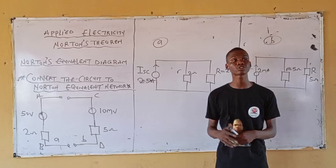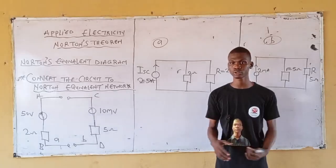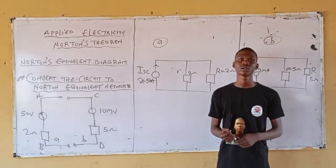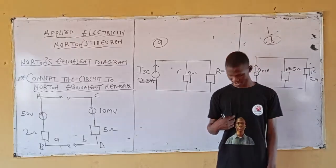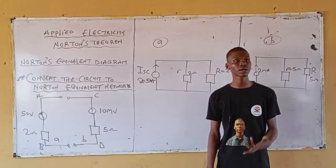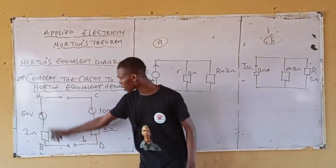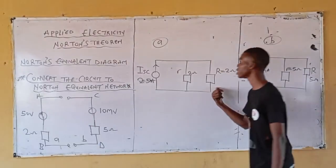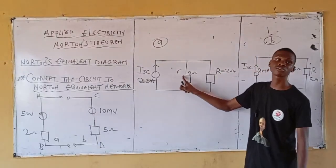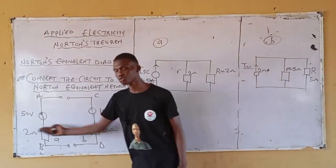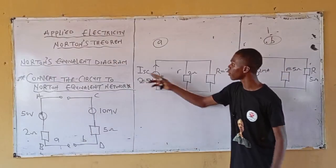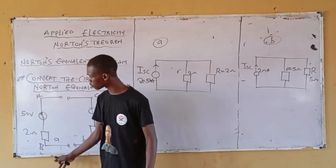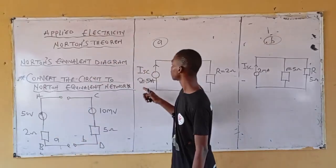No matter how the question might be, don't be afraid. Just try to understand the question and bring it to your level — then you get the answer. For circuit A, we need only the problem because our load resistor is 2 ohms. Then we get our equivalent resistance, and the current flow through the load resistor is 50/2 = 25 Amperes.